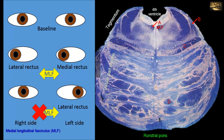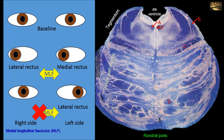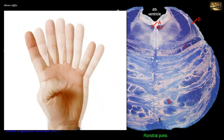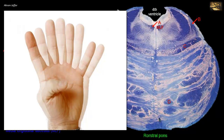Damage to the medial longitudinal fasciculus also results in diplopia. So A matches with 1: damage results in diplopia and nystagmus. Diplopia is double vision — if the right eye is affected, the patient will see double when looking to the left, seeing two images side by side.